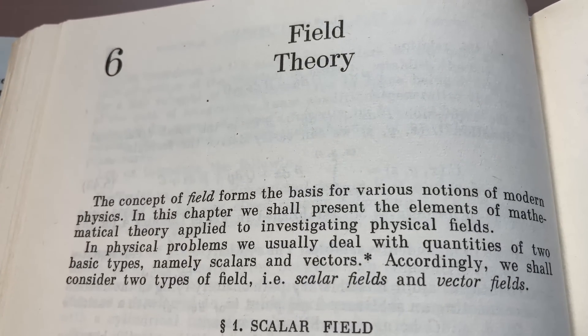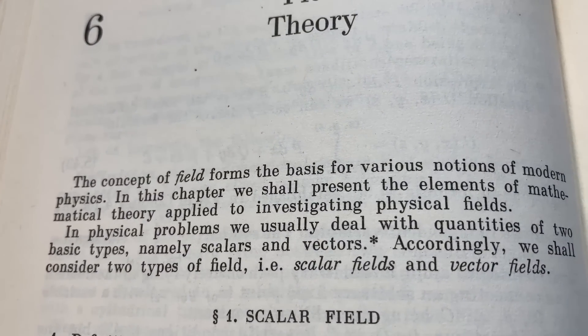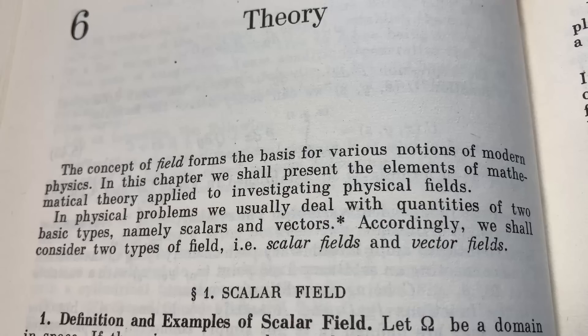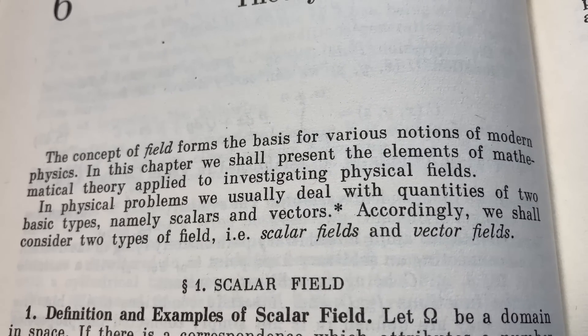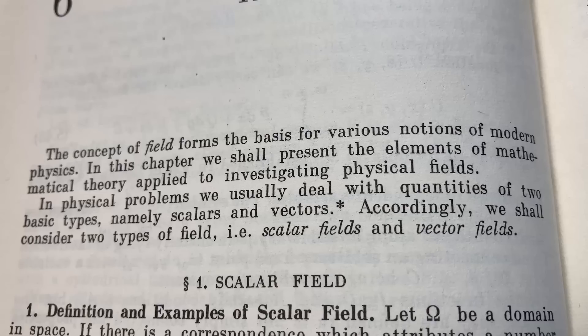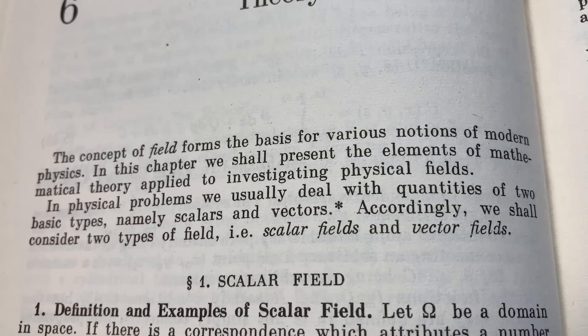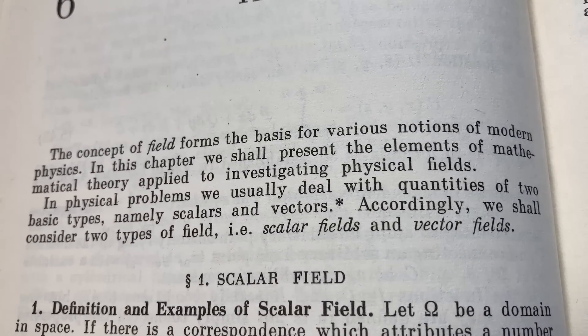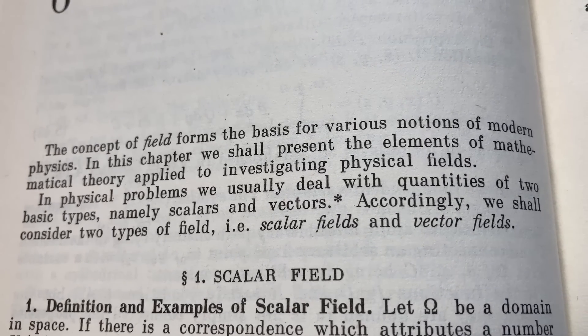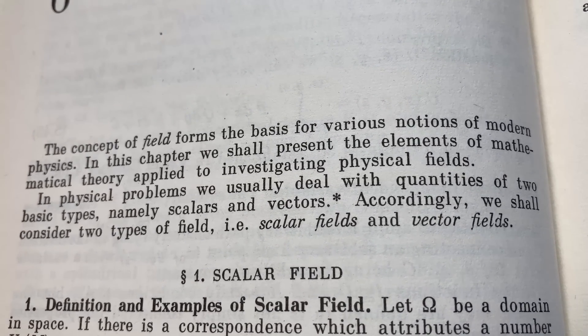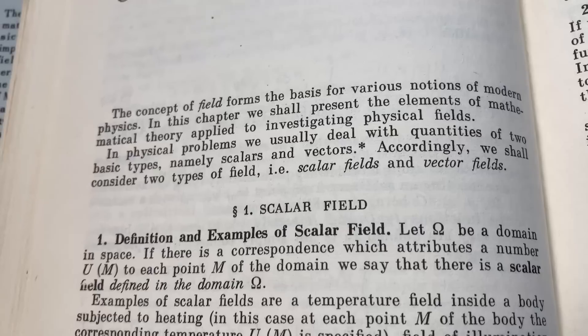Chapter 6 is on field theory. It says here, The concept of field forms the basis for various notions of modern physics. In this chapter, we shall present the elements of mathematical theory applied to investigating physical fields. In physical problems, we usually deal with quantities of two basic types, namely scalars and vectors. Accordingly, we shall consider two types of field: scalar fields and vector fields.